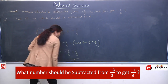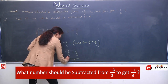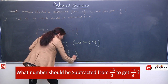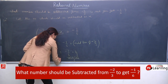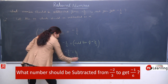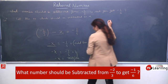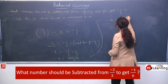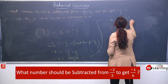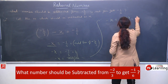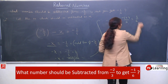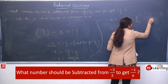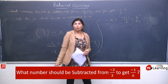6 and 3 ka LCM jo hai wo 6 hai. 6 ones are 6, and 3 twos are 6. So minus x equals to minus 1 plus 4 upon 6, means 3 upon 6. 3 ones are 3, 3 twos are 6 — so finally you have 1 by 2.